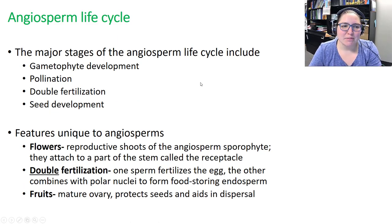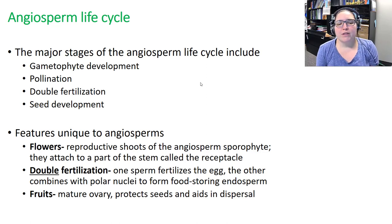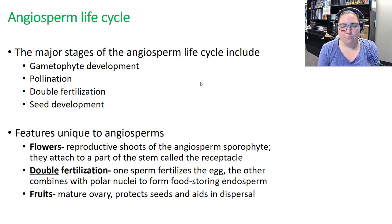As far as the angiosperm life cycle goes, angiosperms are flowering plants, so they have flowers unique to them. They also have double fertilization, where one sperm fertilizes an egg and the other sperm pairs with the polar nuclei in the embryo sac to form the endosperm. Angiosperms also have fruit, which matures from the ovary and is a structure that protects seeds and aids in seed dispersal.